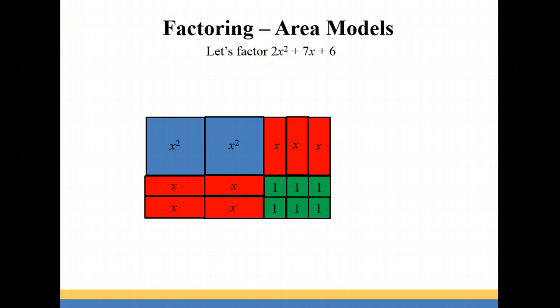We're multiplying the first term, the leading coefficient, which is the A term, by the C term, which is 6, which gives us 12. And then we're looking for factors of 12 that give us 7. And in this case, I had 4 and 3. So what I did, instead of starting with the units, I'm starting with the x's. And I'm arranging those so that I have a product of 12, and I had 7 of them. So I have 3 and 4. 3 times 4 gives me 12, and 3 plus 4 gives me 7. And then the 6 that are remaining fit in perfectly.